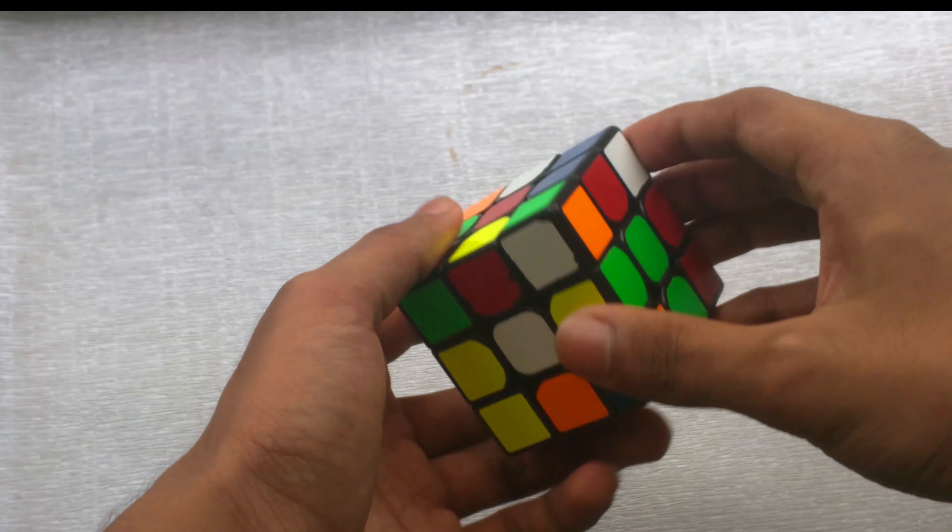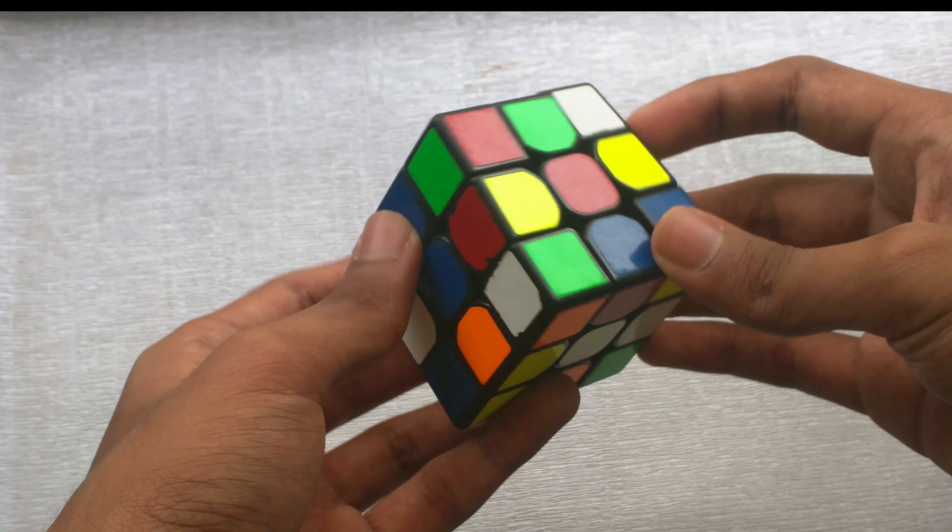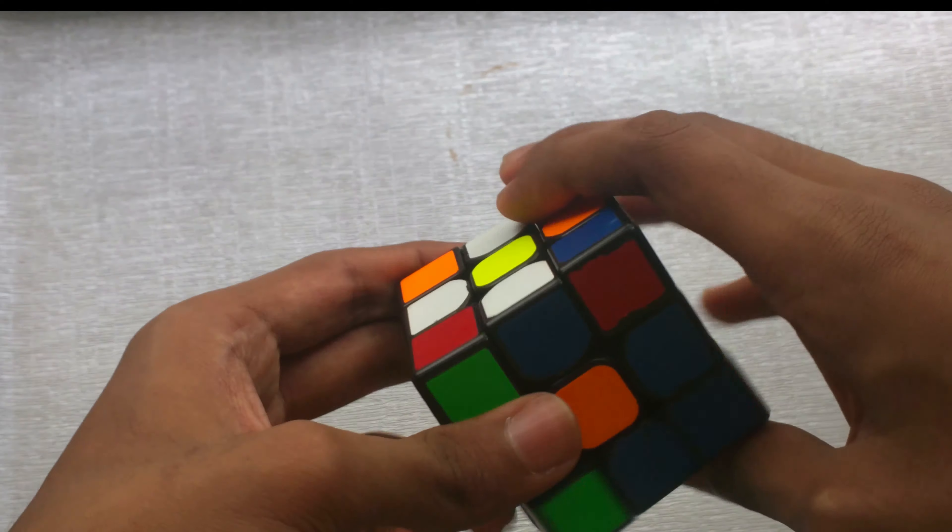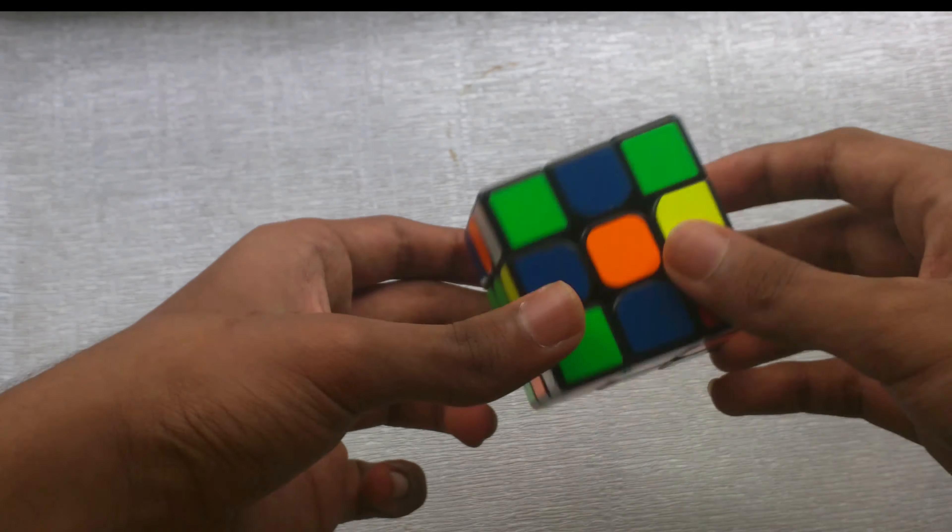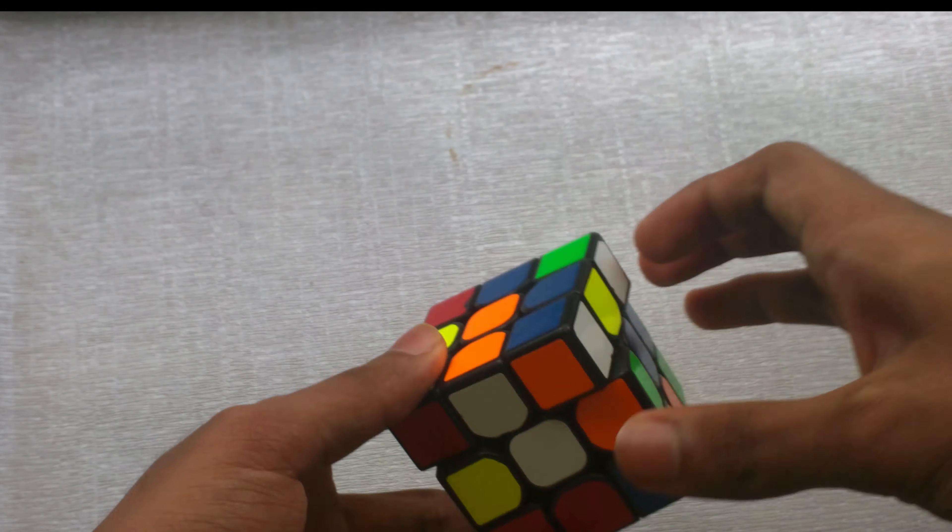In the beginner's method, you would do this. You would put a daisy like so and then one more piece to the left. Like so, you would put a daisy. Then you would align these pieces and then just put the cross for all the pieces.